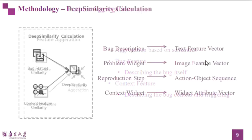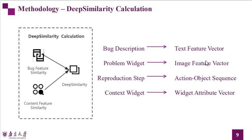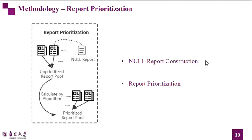After that, we calculate the similarity between all reports to determine the priority of crowdsourced test reports. We name this similarity as deep similarity. We calculate the deep similarity of different features separately and assign different weights to the results of different features. We believe all reports should be treated equally, and the randomly chosen pivot report is likely to affect the final prioritization. Therefore, we introduce the concept of a pivot report. After obtaining the deep similarity, we determine the priority of crowdsourced test reports.